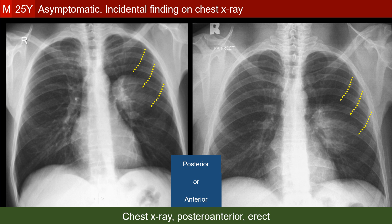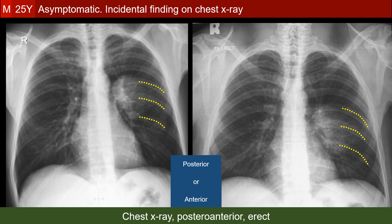I have marked here the anterior parts of the left second, third, and fourth ribs. Note how stable the opacity is in relation to them in the two views. Here we have marked the left 7th, 8th, and 9th ribs posteriorly. See how the position of the opacity has changed in relation to them. The fixation of the opacity to the anterior ribs and the mobility in relation to the posterior ribs denotes that the lesion is arising from the anterior chest wall, not the posterior.